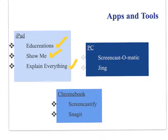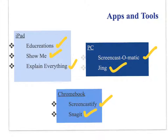Then there is Explain Everything, which is a little bit more complicated. I really don't recommend that for students as much as maybe for a teacher screencast. For the PC, we have Screencast-O-Matic and Jing — those are the big ones. For the Chromebook, we have Screencastify and Snagit. Screener used to be available but is no longer. Some of these tools appear and disappear, but as they disappear, something new appears — generally it's not a big loss because something new and better is available at that point.